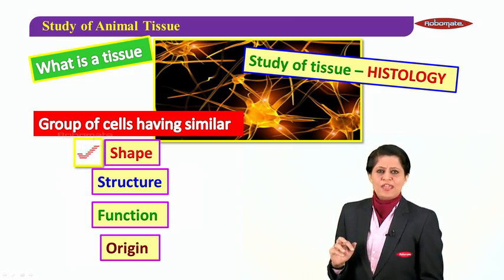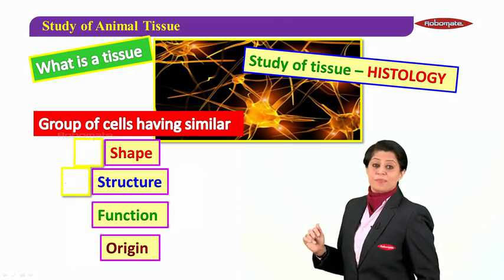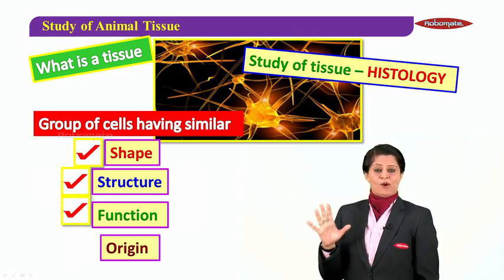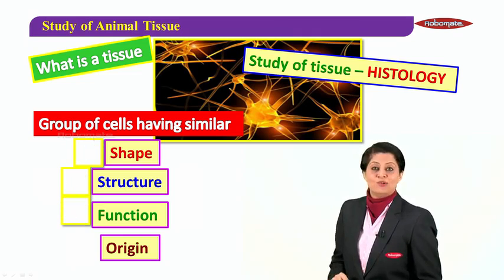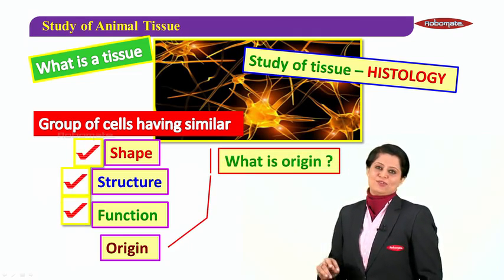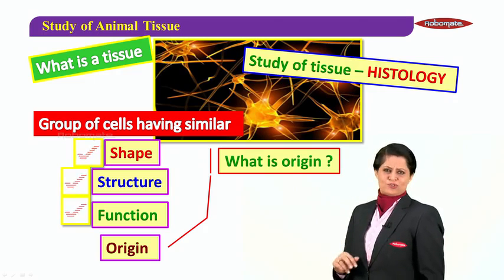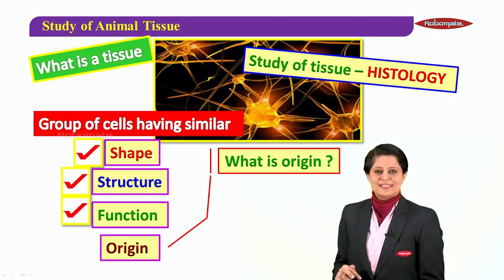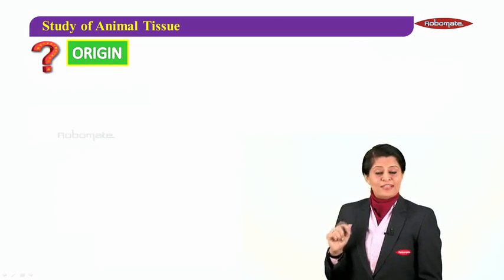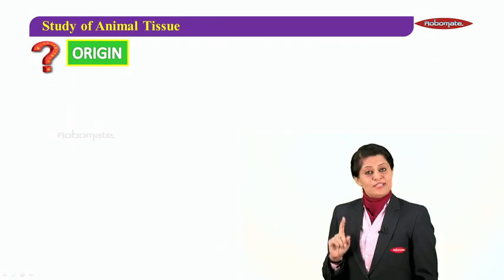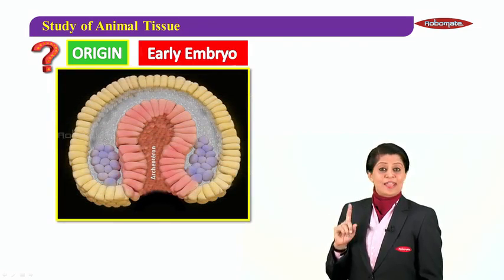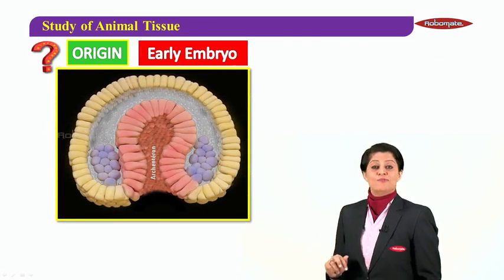Among these four important terms — shape, structure, function, and origin — the term origin needs explanation. When we talk about origin of tissue, we talk about when you were an early embryo in your mother's womb.